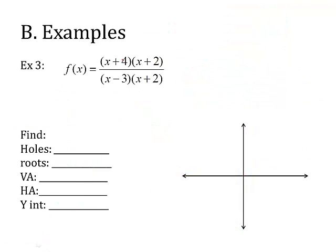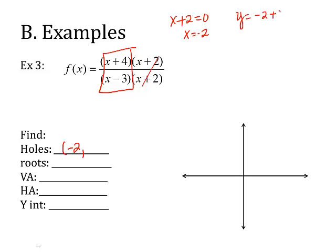Let's try another one. This one's already factored, so it's going to be a little quicker. There is a hole: x plus 2 equals 0 when x is negative 2. To find y, I plug in: negative 2 plus 4 over negative 2 minus 3 gives me positive 2 over negative 5, or negative 2 fifths. That's my y-coordinate for the hole.